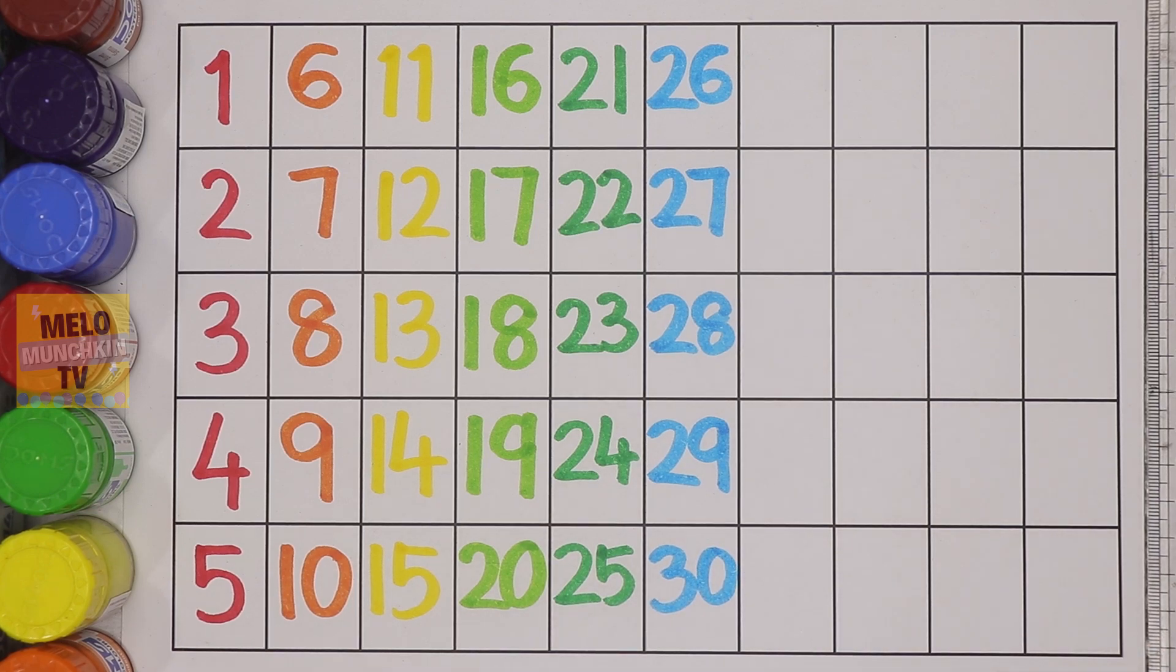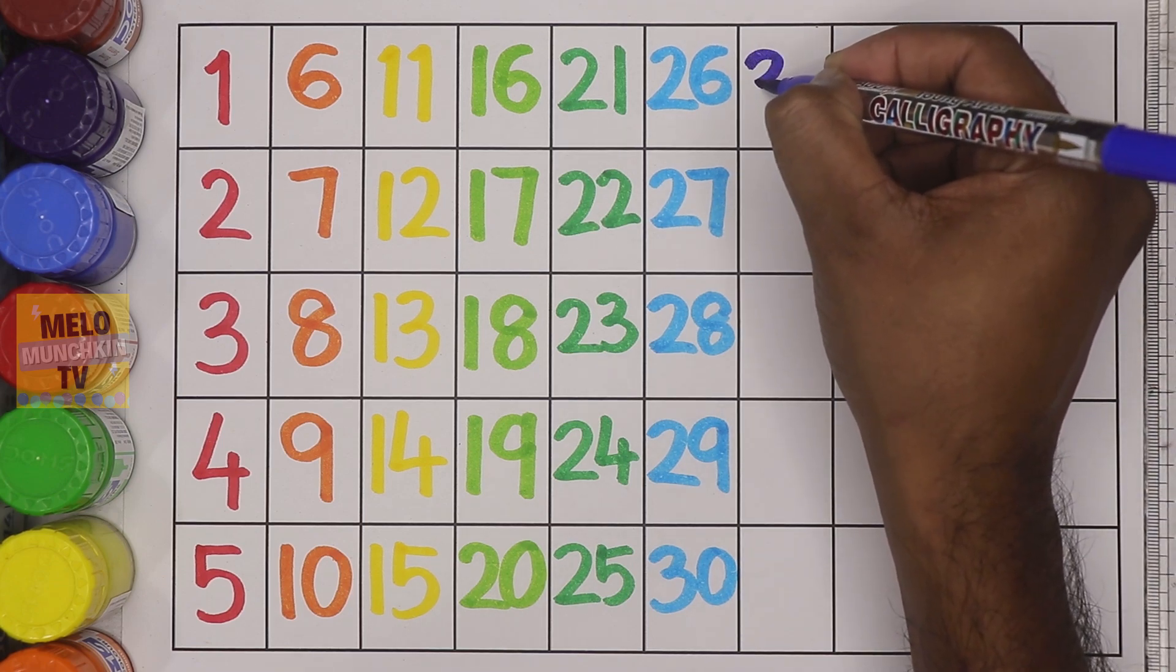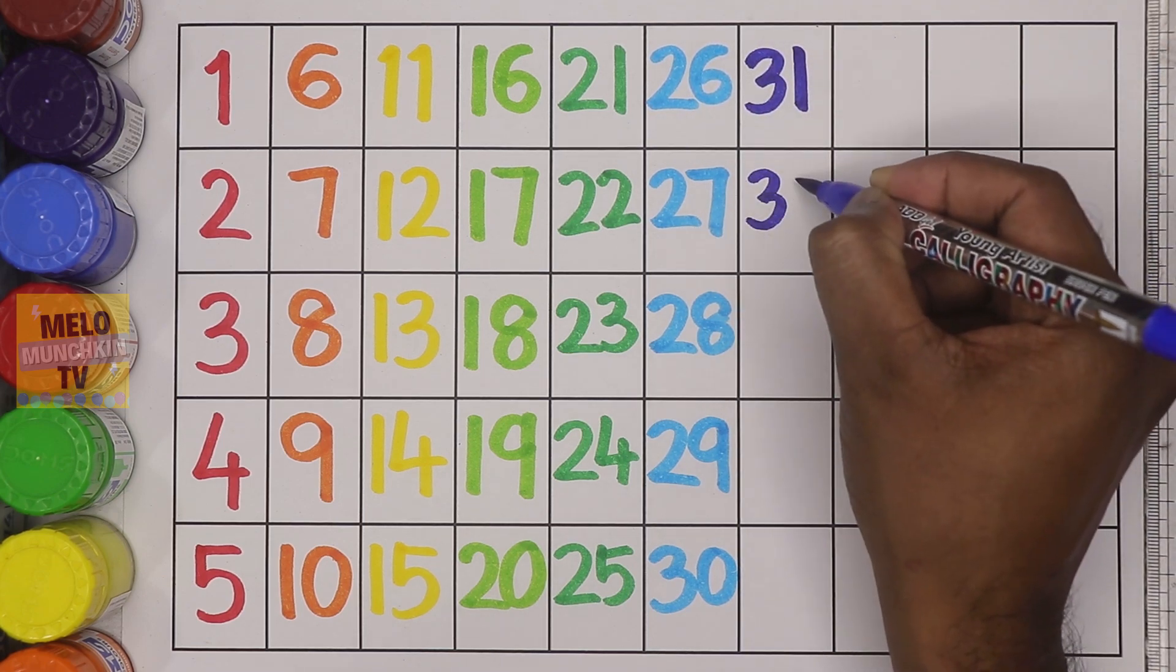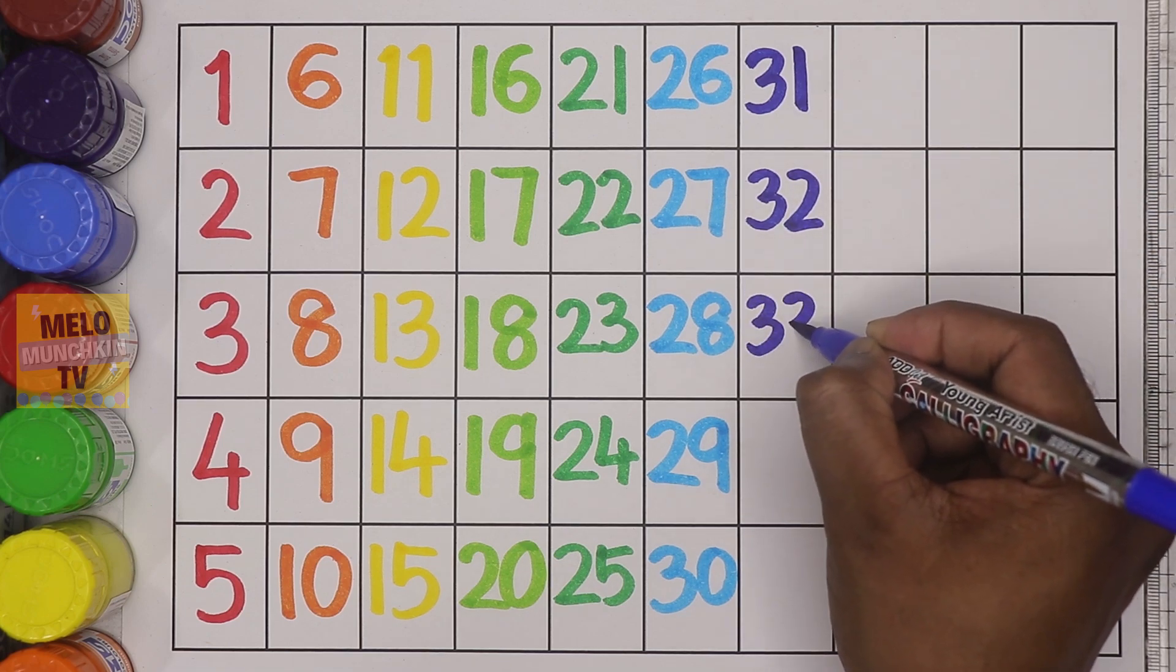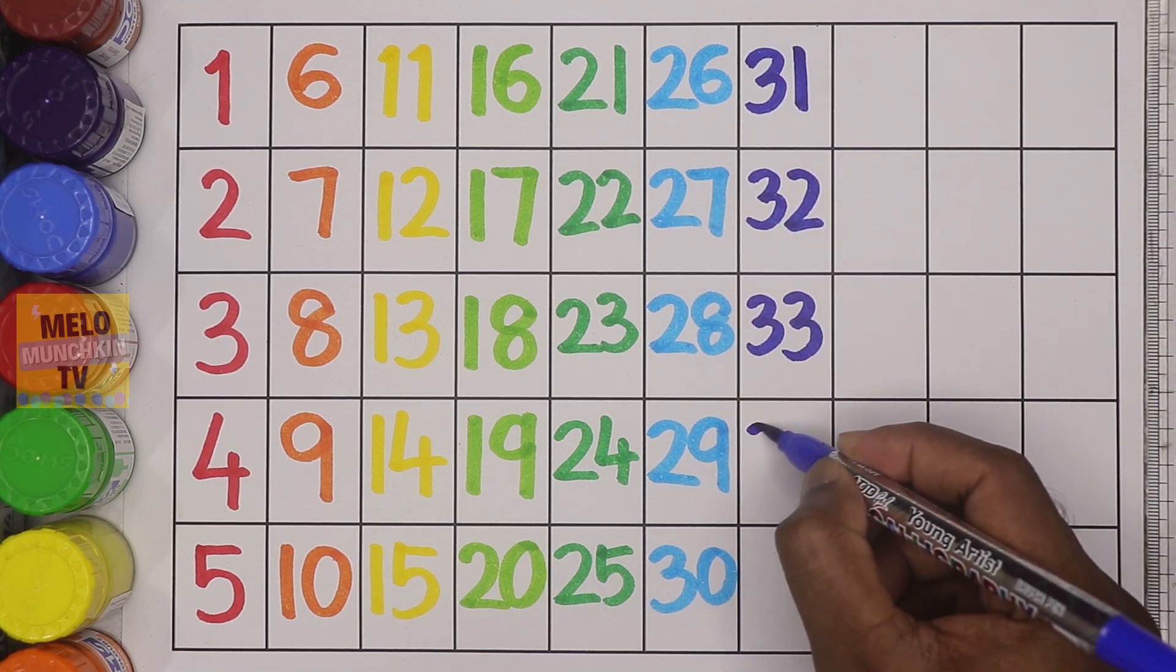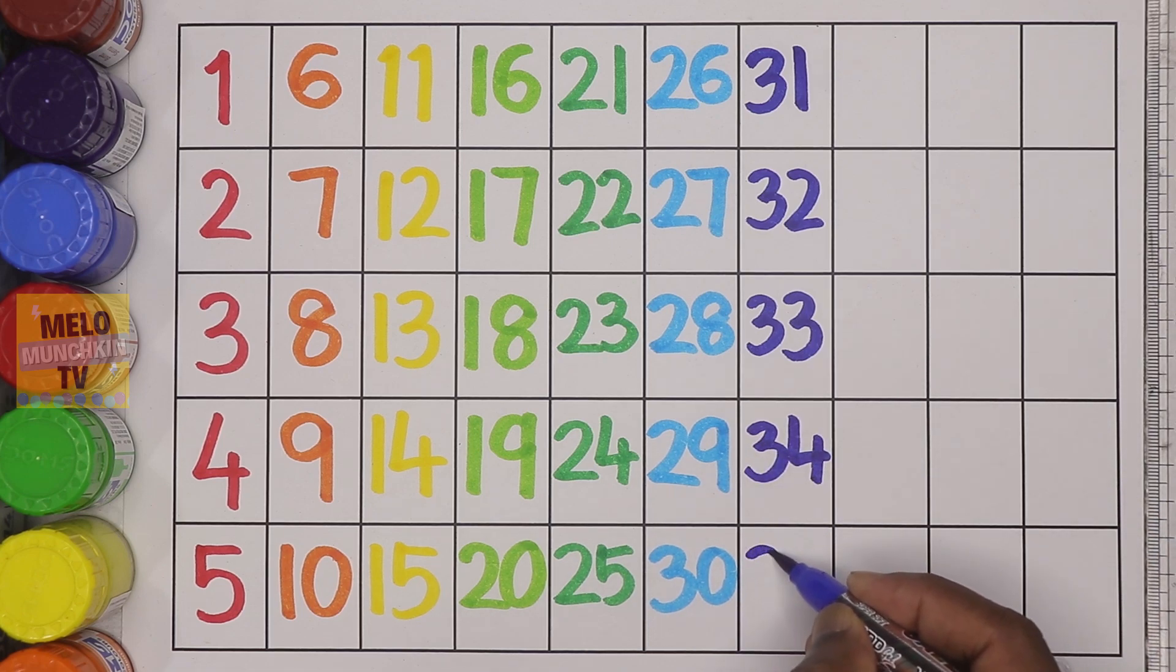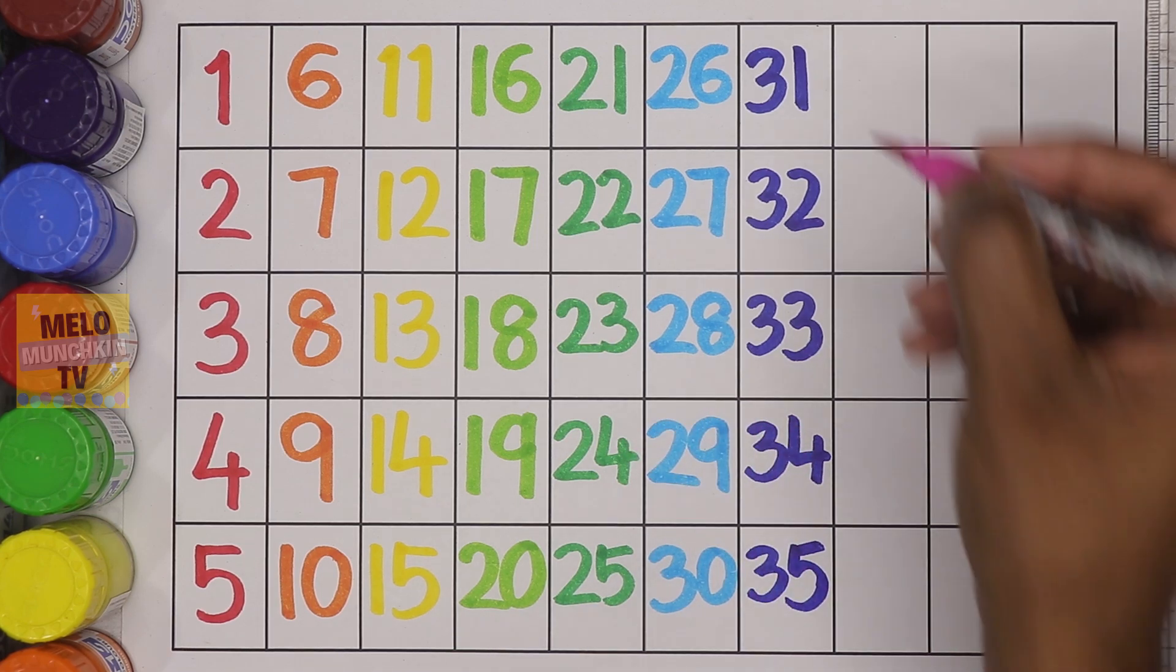Next I'll take dark blue color. So after thirty: thirty-one, thirty-two, thirty-three, thirty-four, thirty-five. Next pink color. So after thirty-five